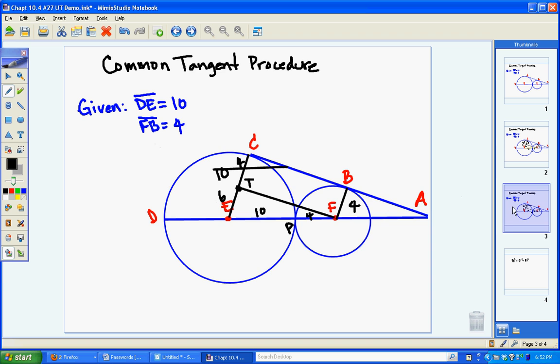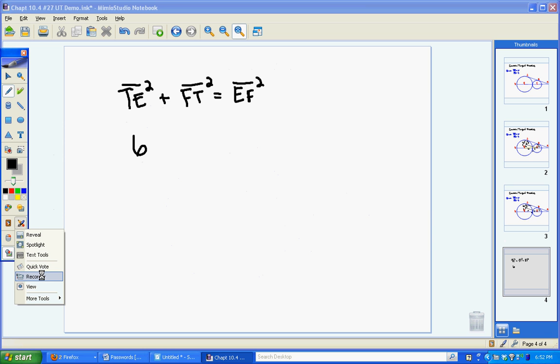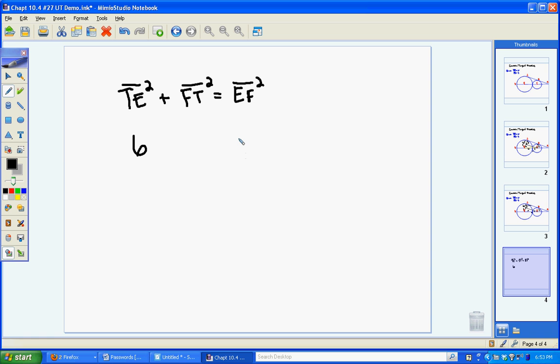So I know that TE is going to be 6. And I know that EF is 14. So I know 6 squared plus FT squared is equal to 14 squared. Which is 36 plus FT squared is equal to 196. Or FT squared is equal to 196 minus 36 or 160.